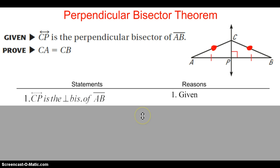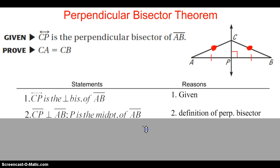What do we know about a perpendicular bisector? There are two things we know from the definition. Number one, the line is perpendicular to the segment. And if it's bisecting it, it's intersecting the segment at its midpoint. So we know that P is the midpoint of AB.